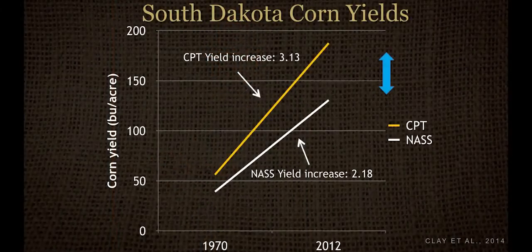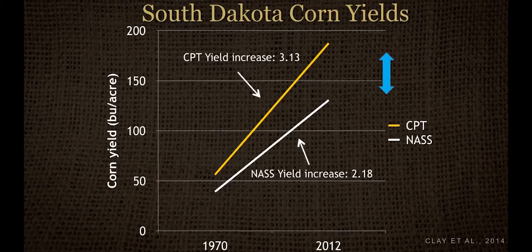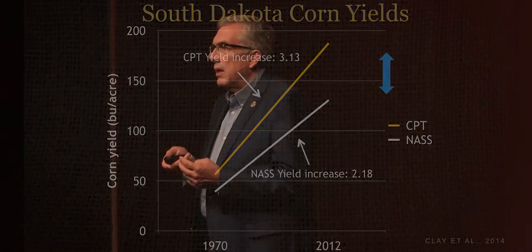And if you look at it in terms of corn, the bottom line of that graph, the white line, shows the increase, the steady increase of corn in South Dakota at two bushels per acre per year.